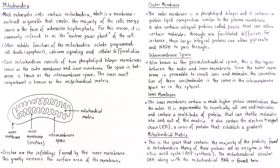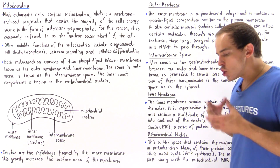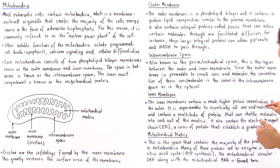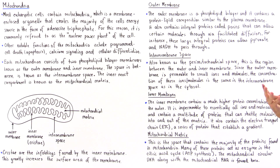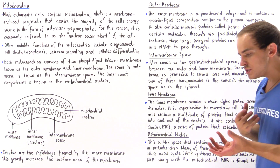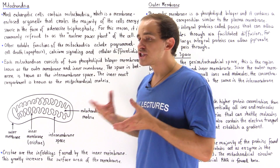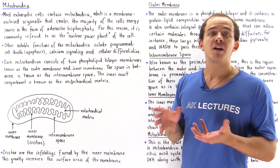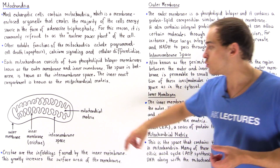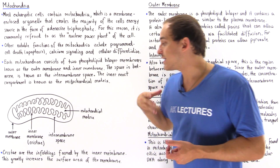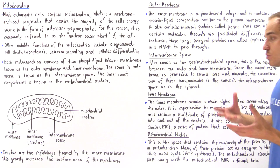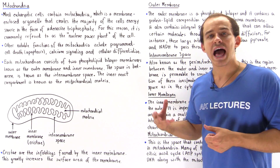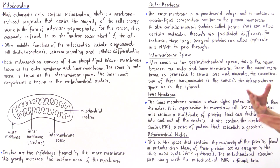The inner membrane also contains a series of proteins known as the electron transport chain, or ETC. These proteins are responsible for setting up an electrochemical gradient between the matrix and the intermembrane space, enabling the ATP synthase protein to create the ATP molecules used as our energy source.